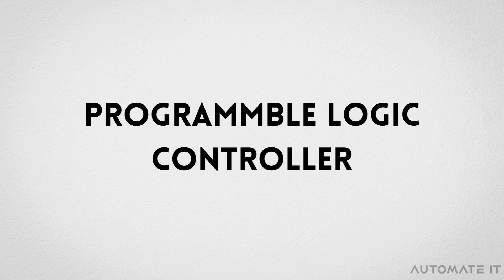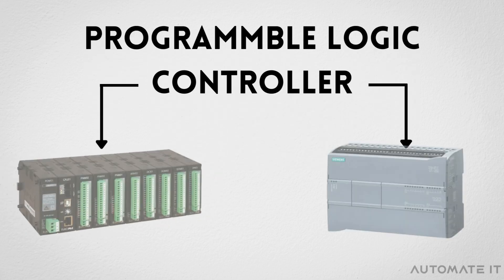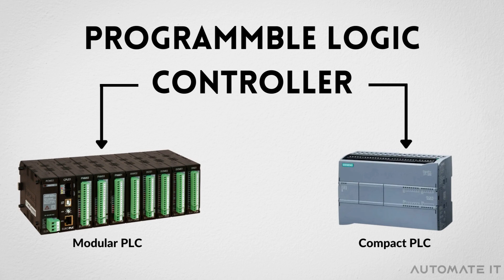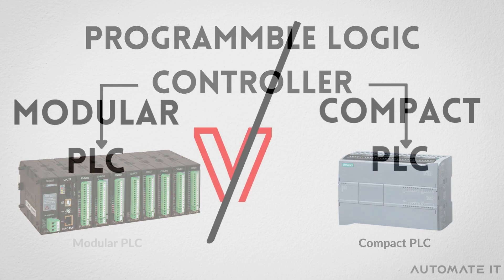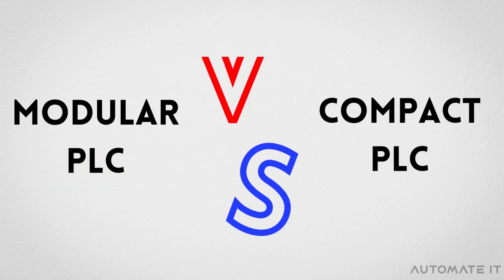Generally speaking, there are two main categories of PLCs: modular and compact. In this video, we'll see the major differences between them.